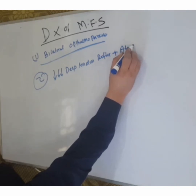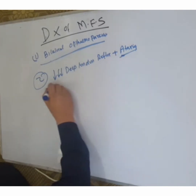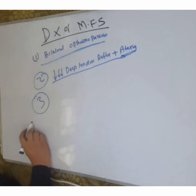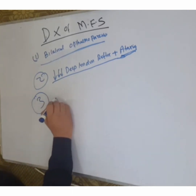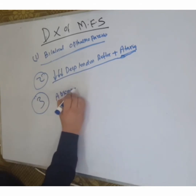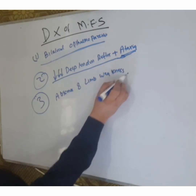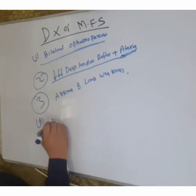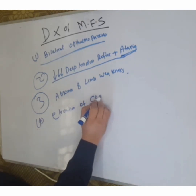Ataxia is present in Miller Fisher Syndrome — ataxia and decreased deep tendon reflexes are key features. The third step is that limb weakness may be absent; the limb weakness is absent in this condition.